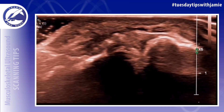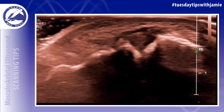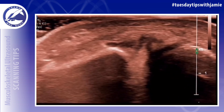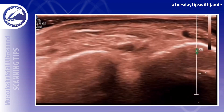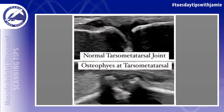Like in this example, the deep peroneal nerve was rubbing up against the osteophyte in the foot. In this side-by-side comparison, you can see what a normal tarsometatarsal joint looks like compared to one with osteoarthritis where osteophytes are present.